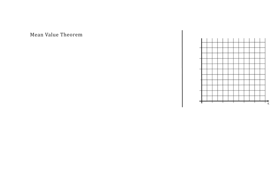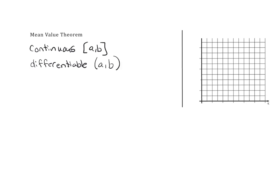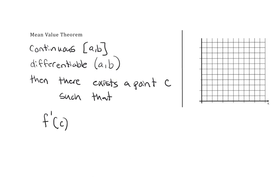The theorem says that if a function is continuous on the closed interval a to b and differentiable on the open interval from a to b, then there exists a point c such that the derivative of this function at point c is equal to the average rate of change on this interval from the endpoints a to b.